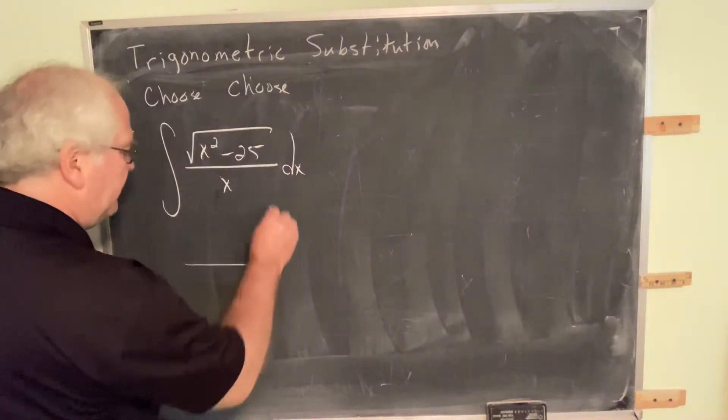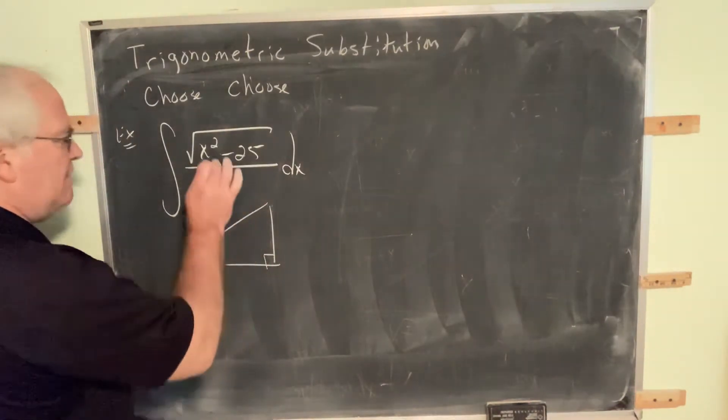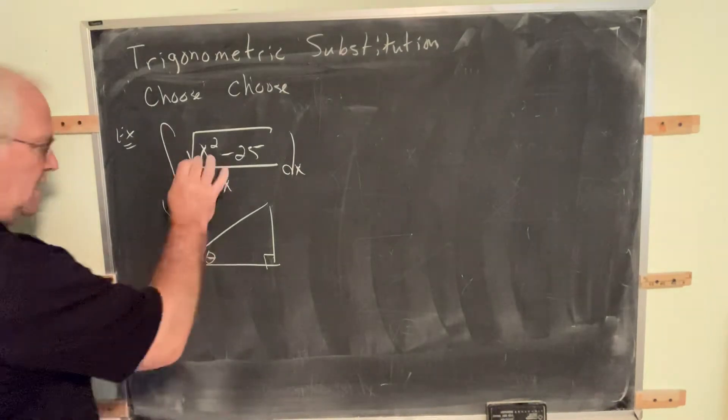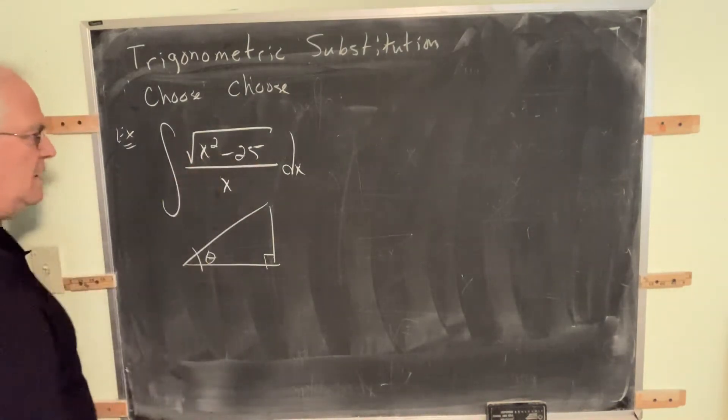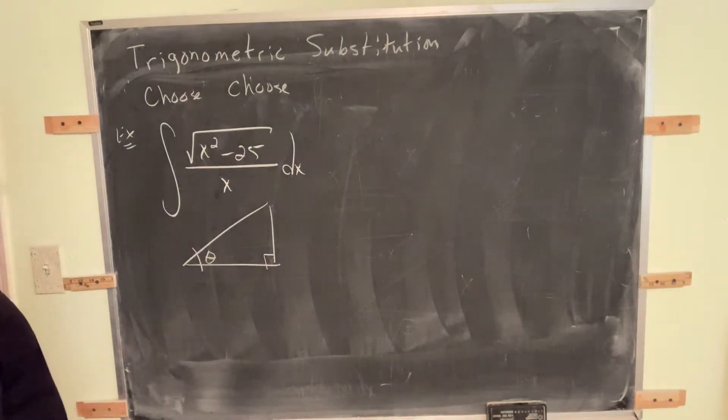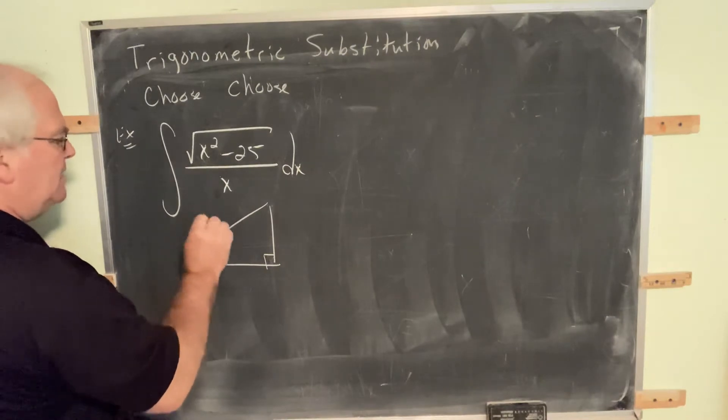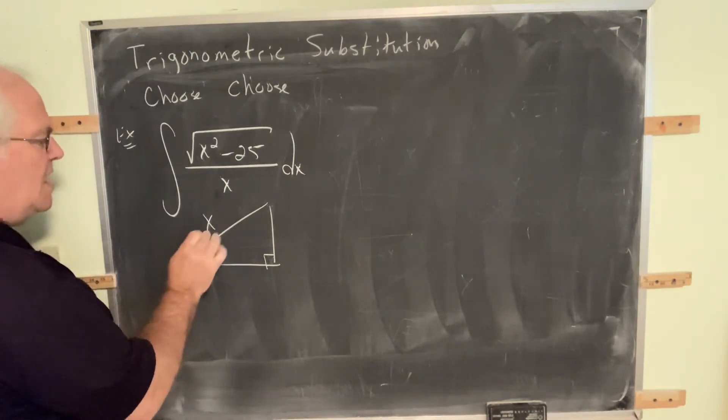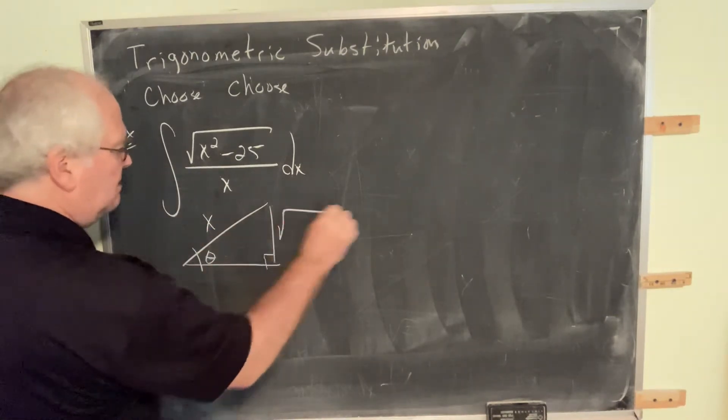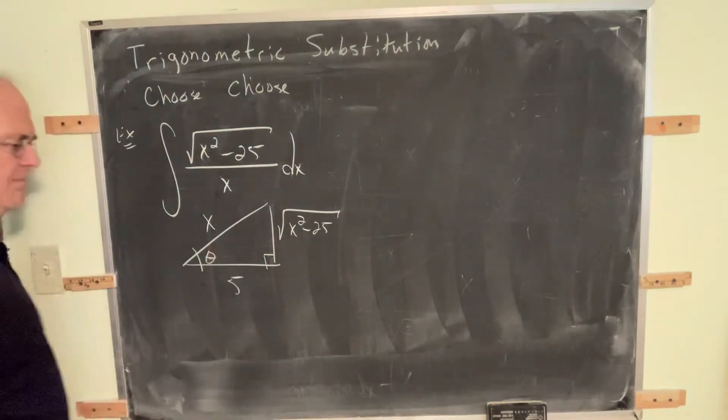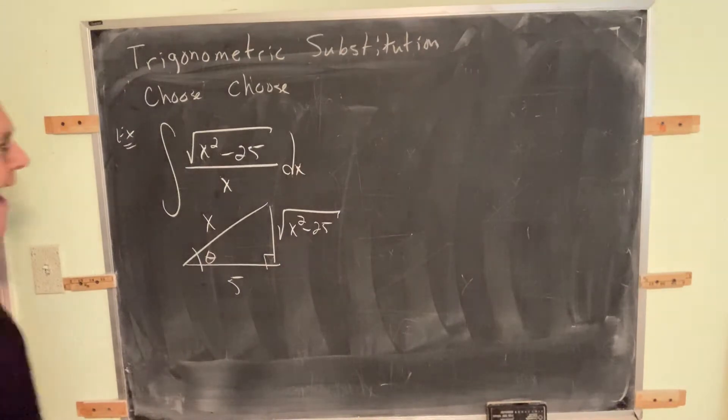Number one, label the triangle. As soon as you recognize you have the radical and difference of squares, difference or sum of squares, then this is a trigonometric substitution. So, can we label this triangle? This, I hope, is becoming part of your mental furniture here. Since it's subtraction, the hypotenuse is the square root of the first. Put as much variable as you can muster here, and then whatever is left over, that becomes a horizontal.